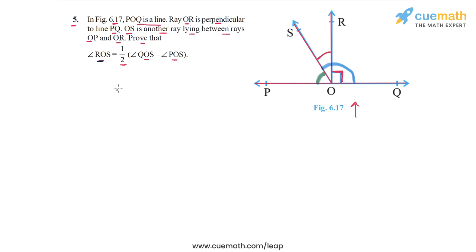The reasoning we will use is that both angles QOS and POS can be written in terms of angle ROS. Can you figure out how? I would urge you to pause the video for a few moments and think about this. Try to write both angles in terms of angle ROS, then take their difference, and you will arrive at the result quickly.